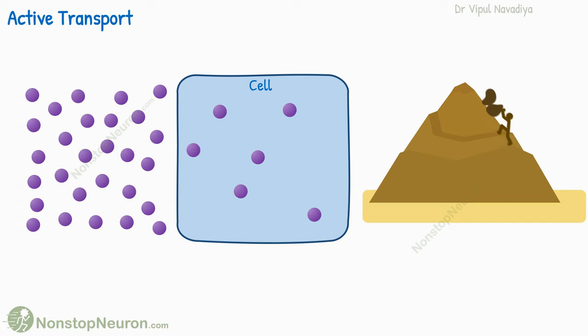By actively transporting, we can move the rock from the base to the top of the mountain. Similarly for the cell, substances cannot move against an electrochemical gradient on their own. If needed, they are moved in such direction actively, by transport proteins.